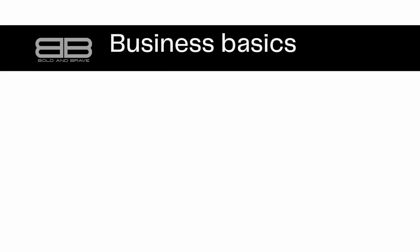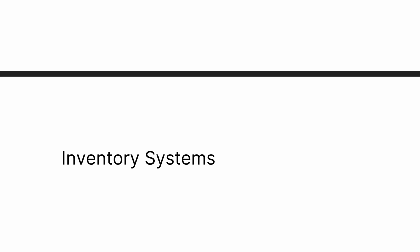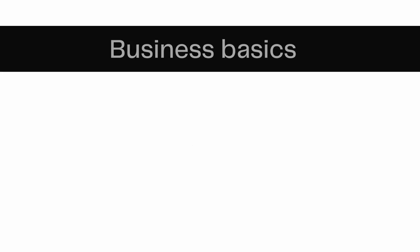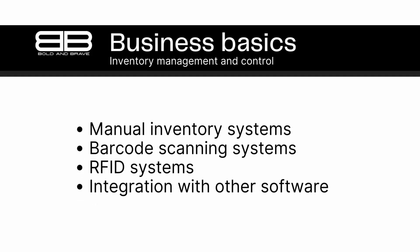Number 6. Inventory Systems. Inventory management and control can be carried out using a variety of systems, including manual systems, barcode scanning systems, and RFID systems. Gone are the days when businesses had to rely solely on manual inventory management systems.